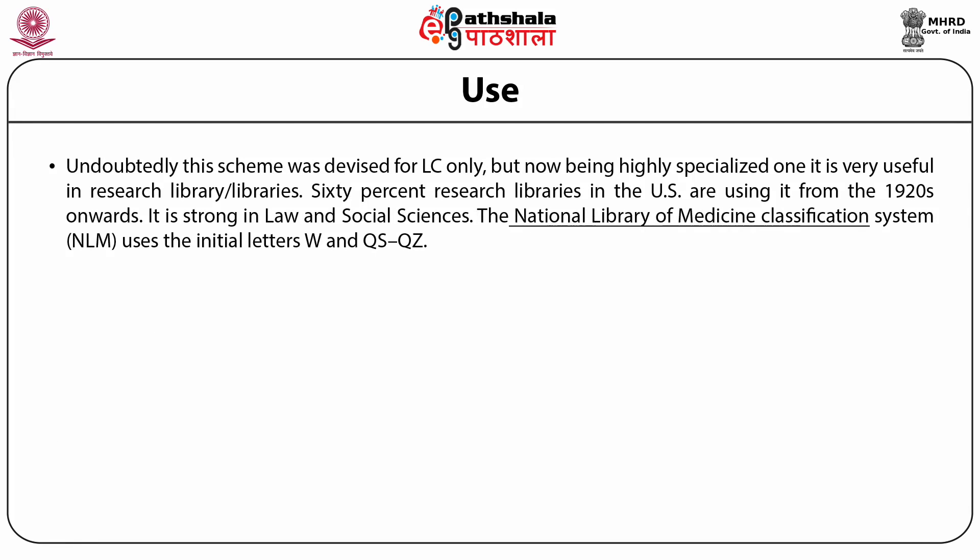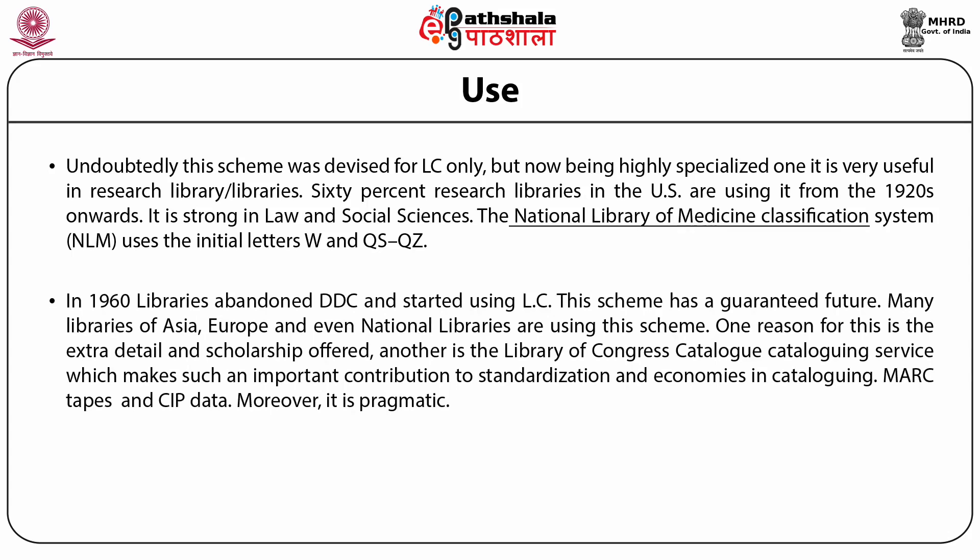No doubt the scheme was devised for internal use of the Library of Congress only. But now, being highly specialized, it is very useful in research libraries. 60% of research libraries in the US have been using it from the 1920s onward. It is strong in law and social sciences. The National Library of Medicine classification system (NLM) uses the initial letters W and QS and QZ. In the year 1960, libraries abandoned DDC and started using the Library of Congress scheme. Many libraries of Asia, Europe and even national libraries are using this scheme. One reason is the extra detail and scholarship offered. Another is the Library of Congress cataloging service, which makes an important contribution to standardization and economics in cataloging.